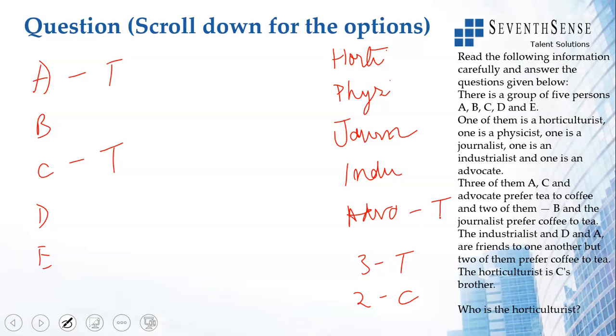I don't know who is the Advocate. Two of them, B and the Journalist prefer coffee. B and the Journalist prefer coffee, which means